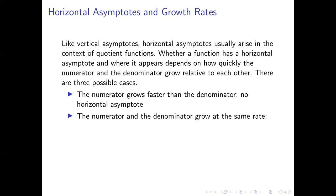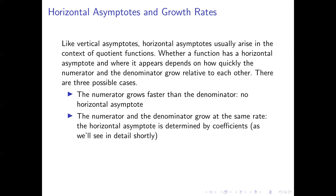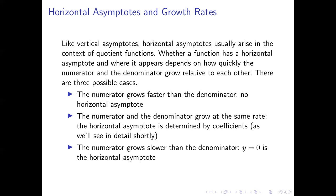The second possibility is that the numerator and denominator grow at the same rate. In that case, we need to look at the coefficients in the numerator and denominator — this is the most complicated of the three cases. The third possibility is that the numerator grows more slowly than the denominator, and in that case the line y equals zero is guaranteed to be the only horizontal asymptote of the function.